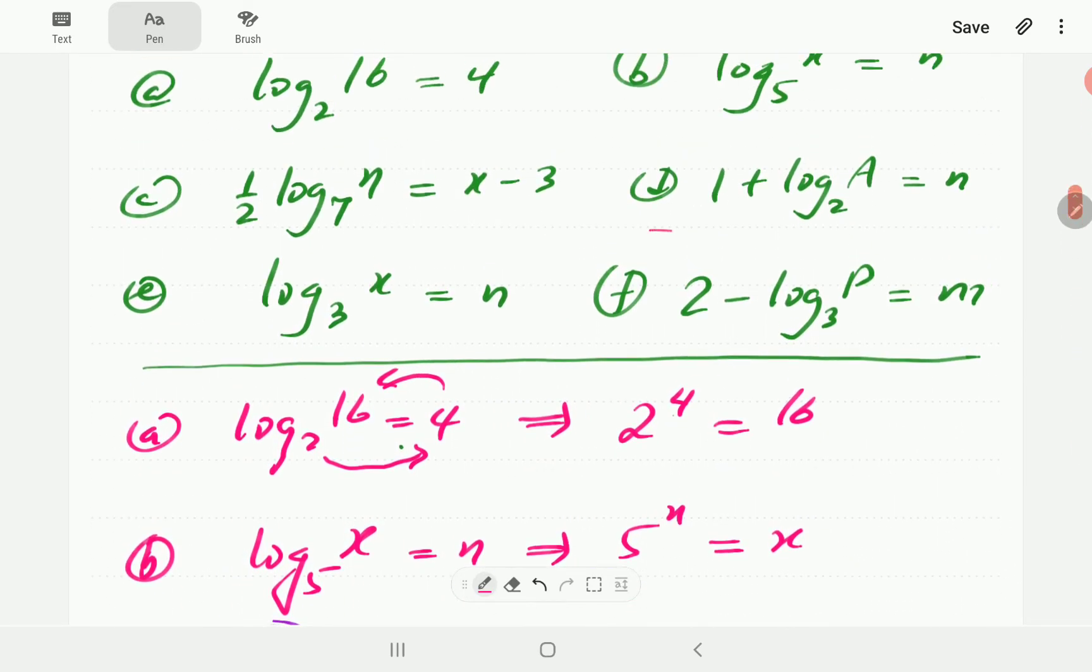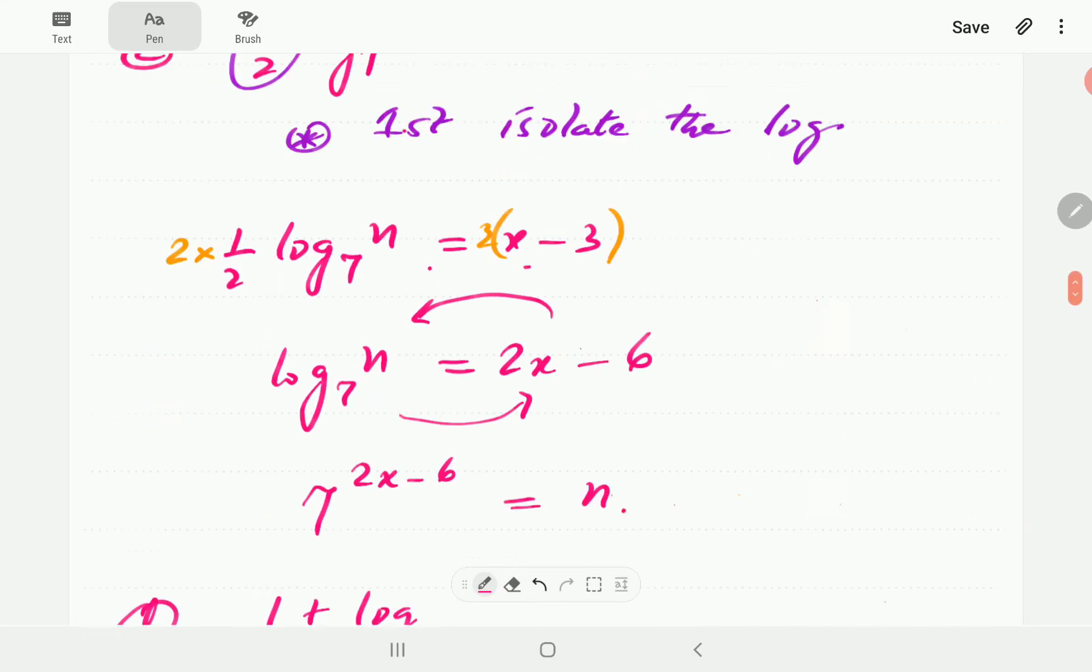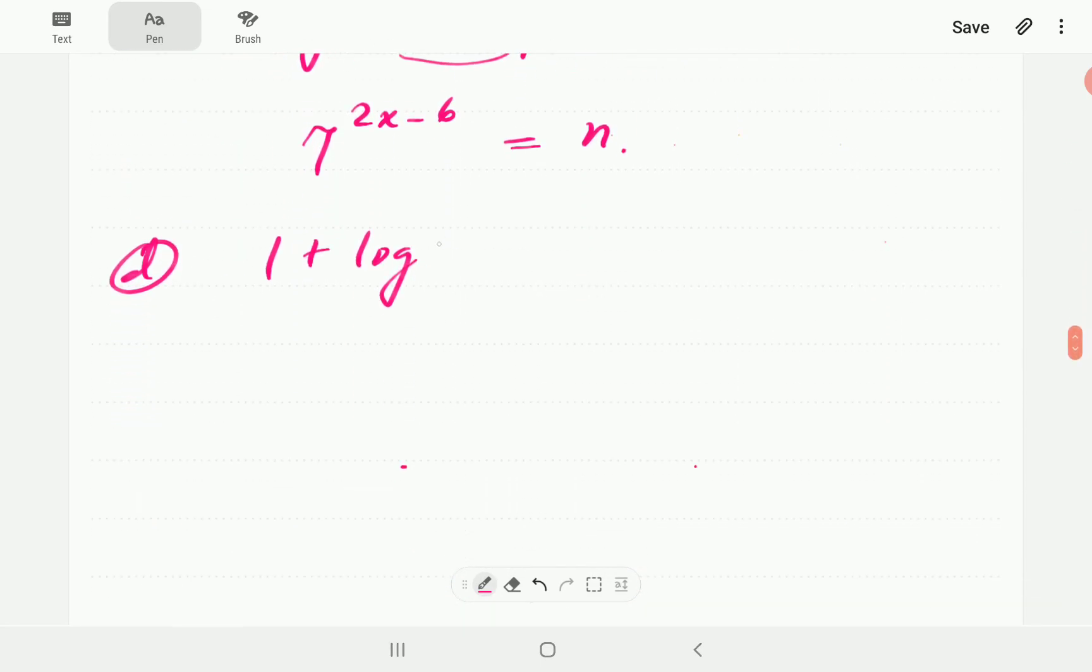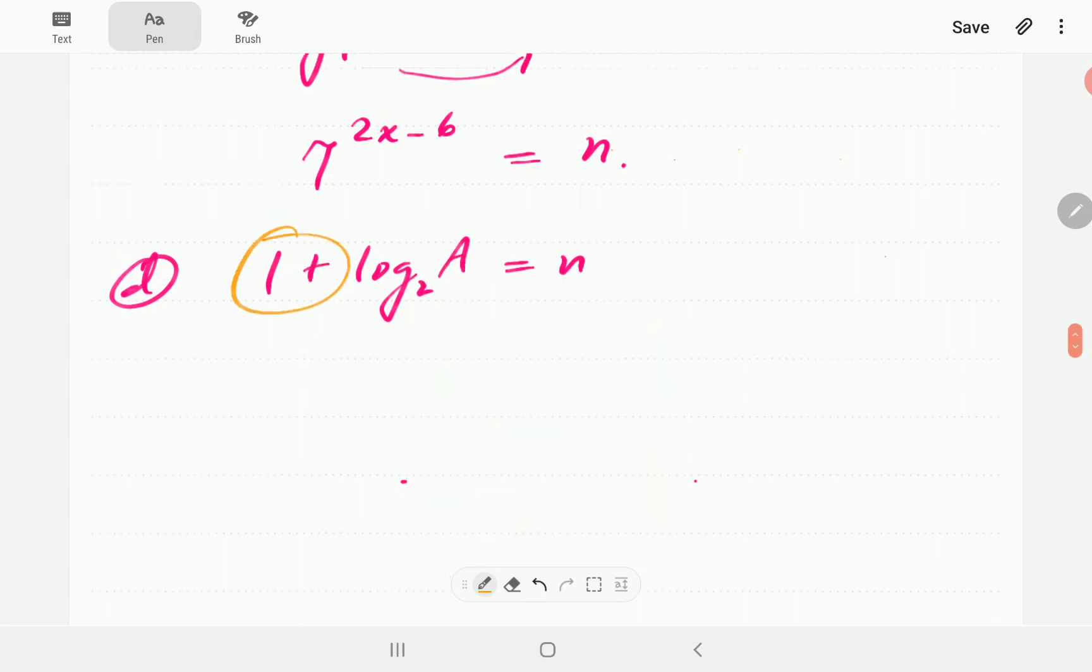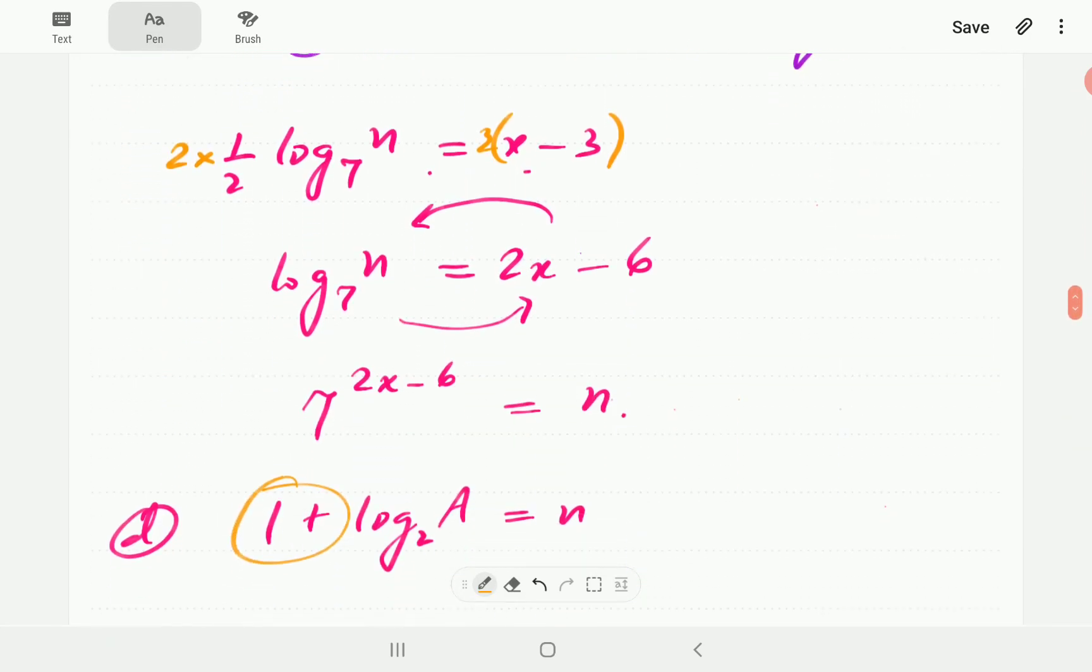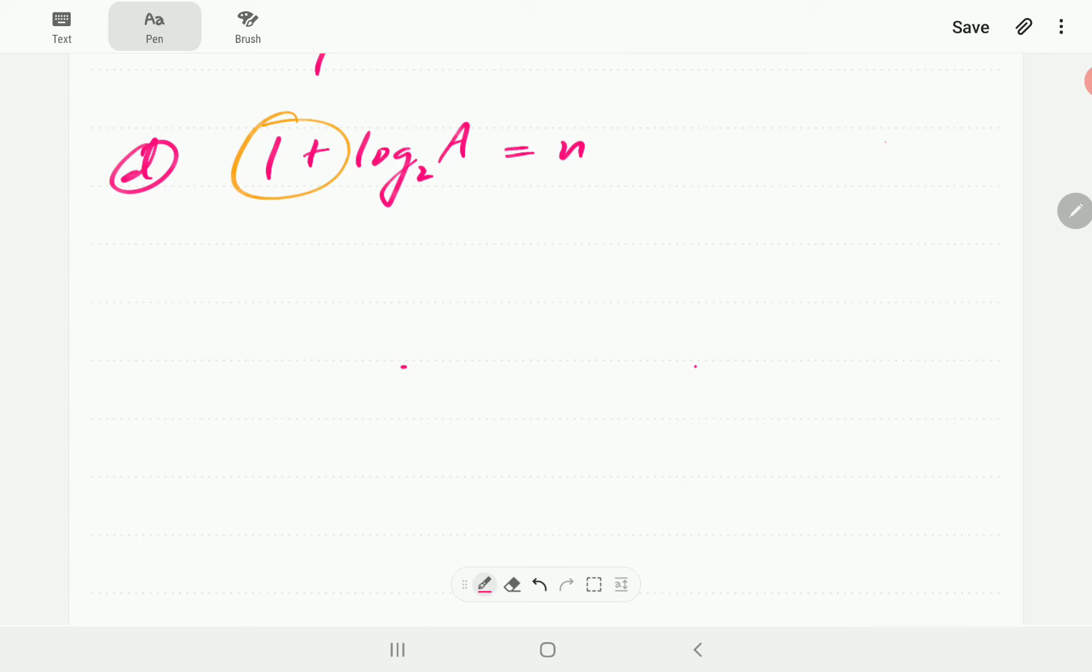And then, in d, we have got a similar situation. We have got 1 plus log a base 2 is equal to n. This time, we are first going to take this one to the right-hand side. The one on the left-hand side is adding. So, we take it to the other side. It's going to be subtracting. We're going to have n minus 1 is equal to log a base 2. And then, in exponential form, this is going to be 2 to the power n minus 1 is equal to a.